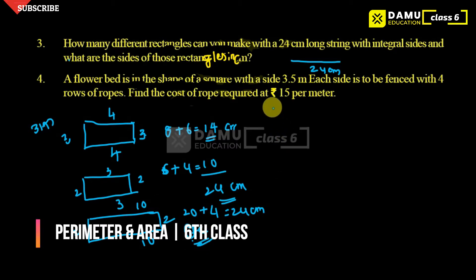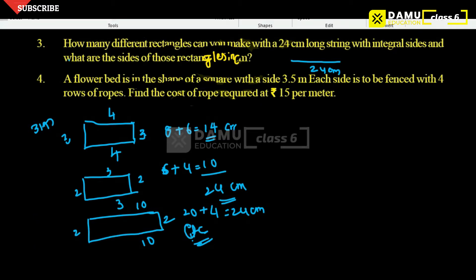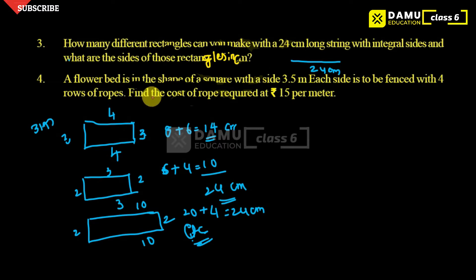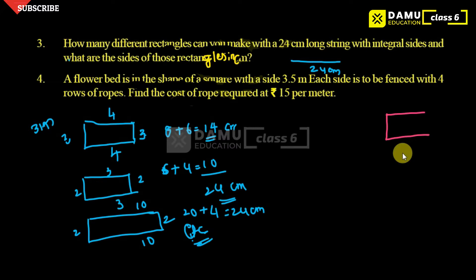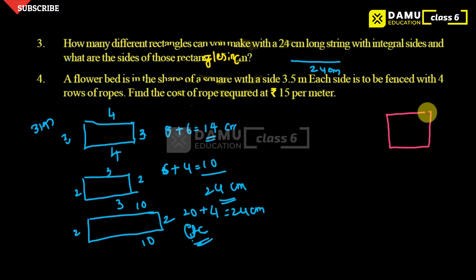Next, our fourth question: a flower bed is in the shape of a square with a side of 3.5 meters. The flower bed is square-shaped, with each side being 3.5 meters, and it is to be fenced with four rows of ropes.